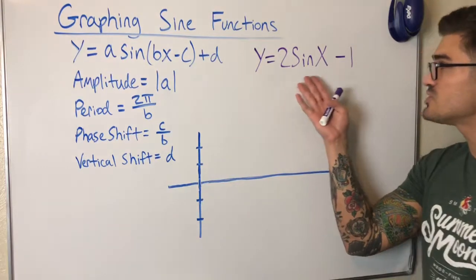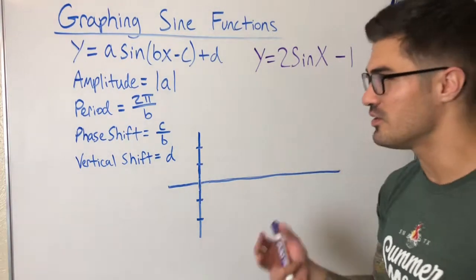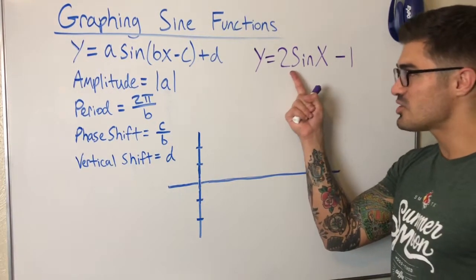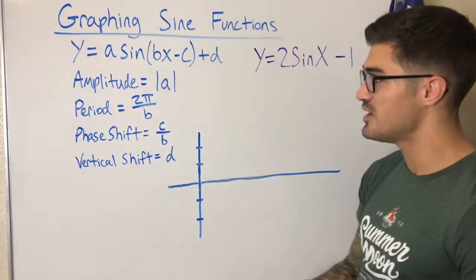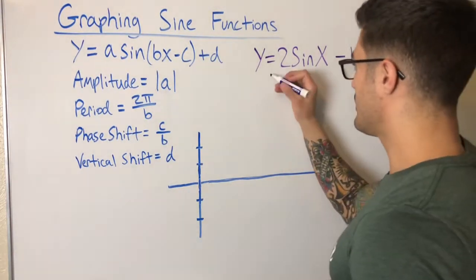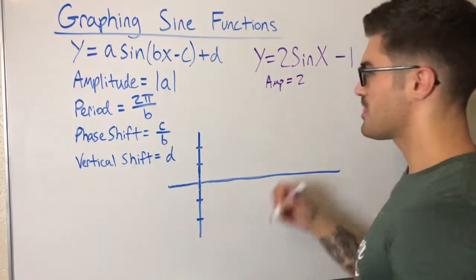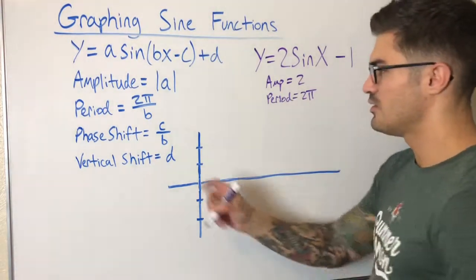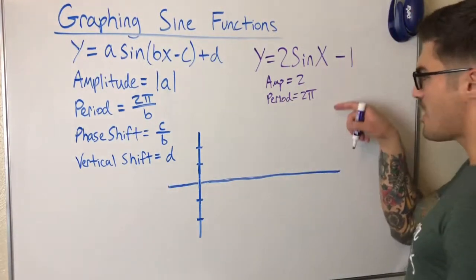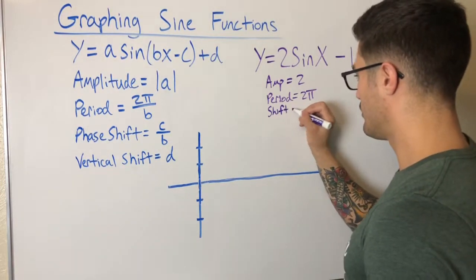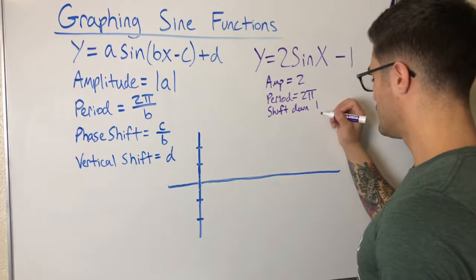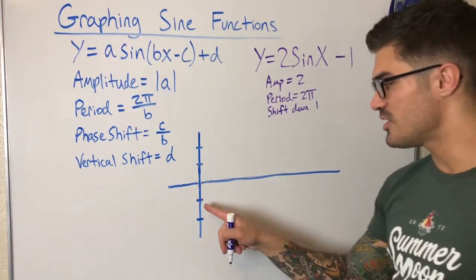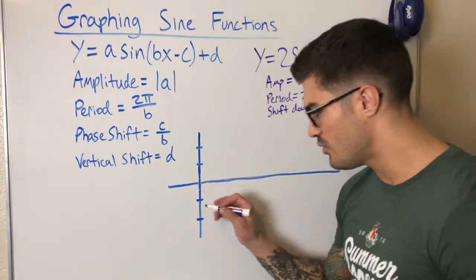Let's graph the example y equals two sine x minus one. Our A is two, so our amplitude is two. Our B is one, so the period is still two pi. There is no phase shift. There is a vertical shift down one unit. Since we're shifting down one, the starting point — which is normally (0, 0) — is now (0, negative one).